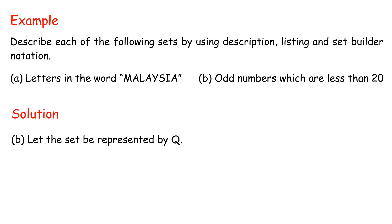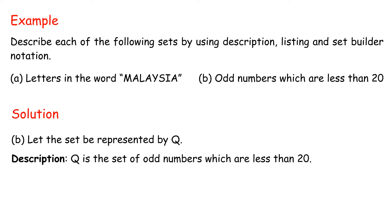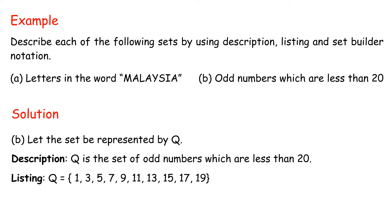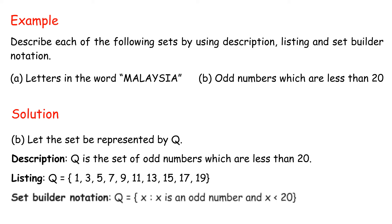B — let the set be represented by Q. Description: Q is the set of odd numbers which are less than 20. Listing: Q = {1, 3, 5, 7, 9, 11, 13, 15, 17, 19}. Set-Builder notation: Q = {x | x is an odd number and x < 20}.